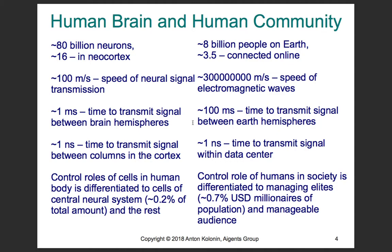The number of neurons in the neural cortex is just a few times greater than the number of people on Earth. Nearly the same time is needed to send a signal across segments of brain cortex and between human users in two different segments of a computer network. The same hierarchical organization takes place in both cases, and a fraction of a percent of cells in the human body actually controls its operation — just as a fraction of a percent of Earth's population exerts control over the vast majority of people.